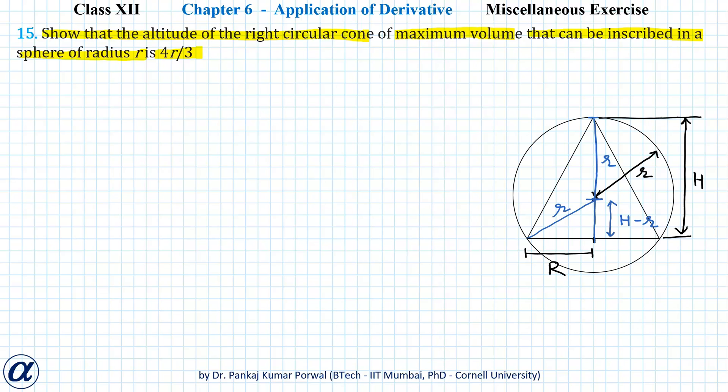Here we have a sphere with radius r and a cone inscribed in that sphere with altitude H and radius of the base capital R, and we want to maximize the volume of this cone.